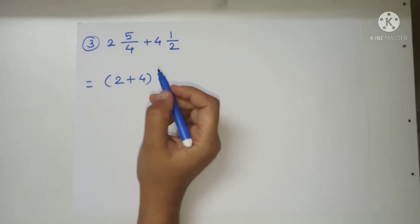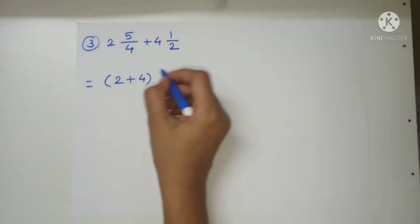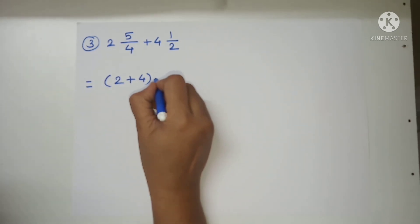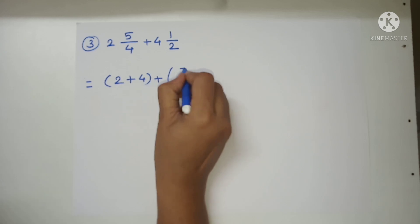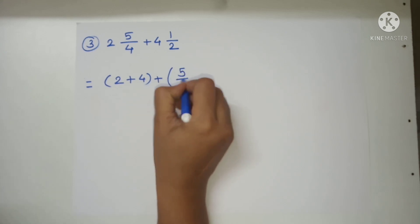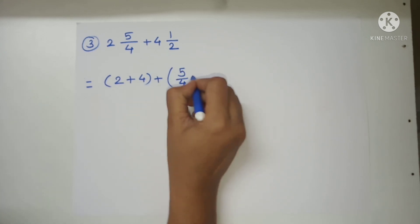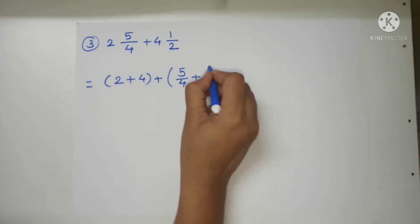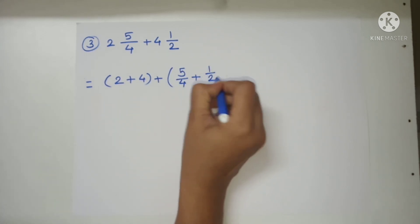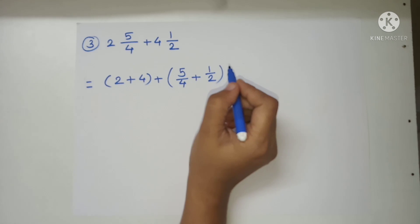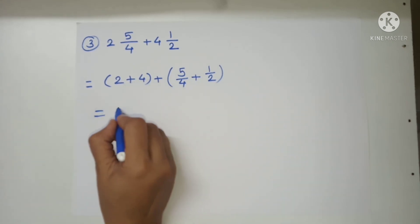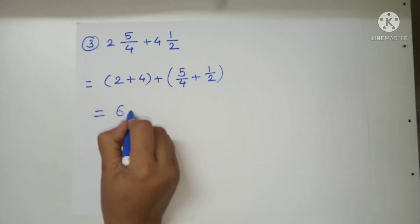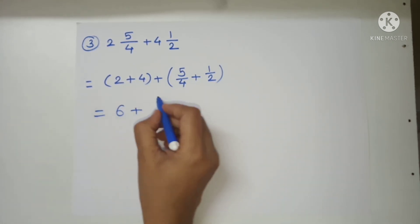In the second bracket we do addition of the fractions: 1 upon 2 plus 1 upon 4. So we have 2 plus 4 in one bracket, and the fractions in another.